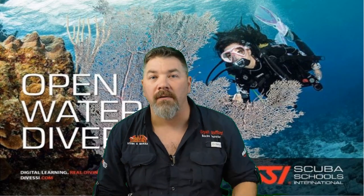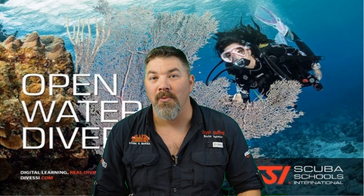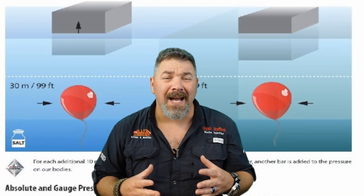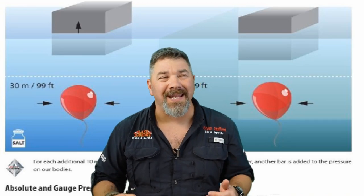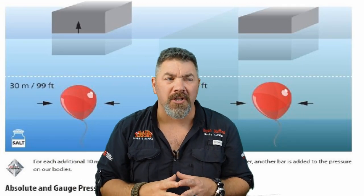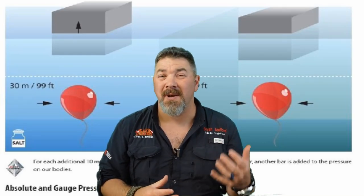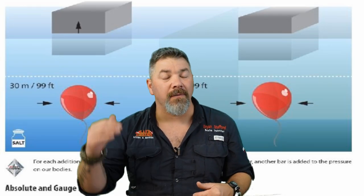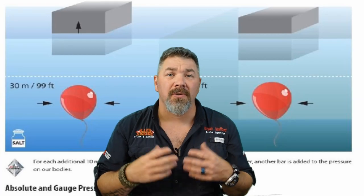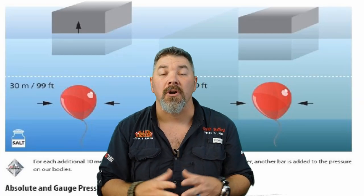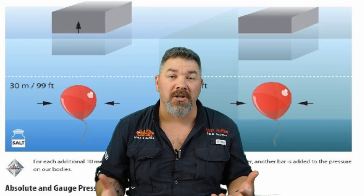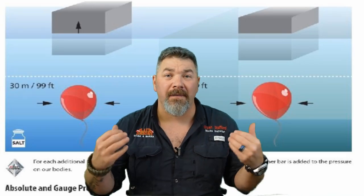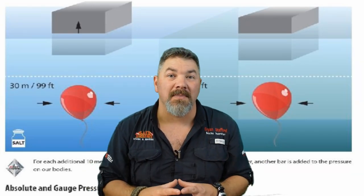Let's jump into part one of the SSI Open Water Diver program. The very first thing you'll learn is the different types of pressures. Anything above the surface is considered atmospheric pressure — a constant pressure that doesn't really change at sea level. Anything below the surface is gauge pressure. Atmospheric pressure added to gauge pressure gives us total atmospheric pressure, or absolute pressure. We need to understand how that pressure affects our body and our equipment.